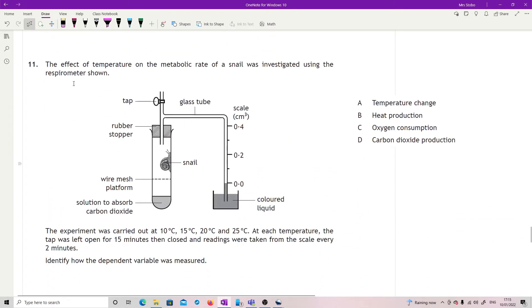Question eleven: the effect of temperature on the metabolic rate of a snail was investigated using a respirometer. We've got a standard low-tech respirometer here. The experiment was carried out at 10, 15, 20, and 25 degrees C. At each temperature the tap was left open for 15 minutes, then closed and readings were taken from the scale every two minutes. Identify how the dependent variable was measured. So that's the thing that we are trying to actually look at. It's not temperature change because that is the independent variable, not the dependent. It is not heat production because there is nothing to do with that at all. So what we're left with is either oxygen consumption or carbon dioxide production. Now any carbon dioxide which is being produced is being absorbed. What we're actually measuring is how much oxygen has been taken up into the snail, so it is oxygen consumption.